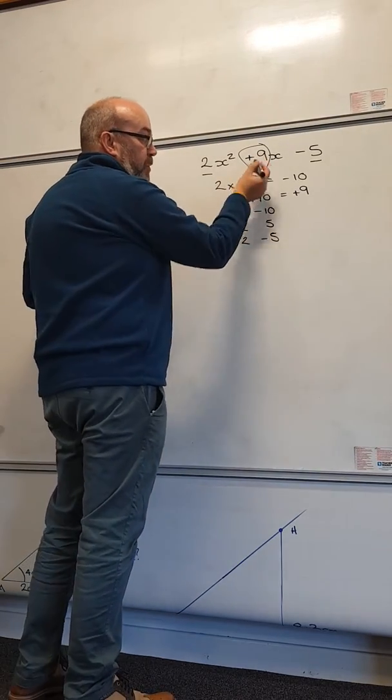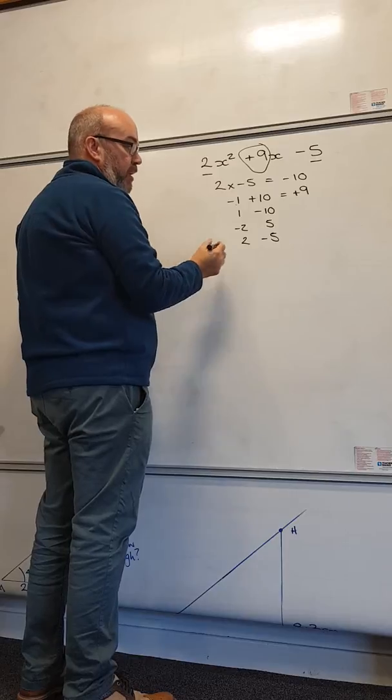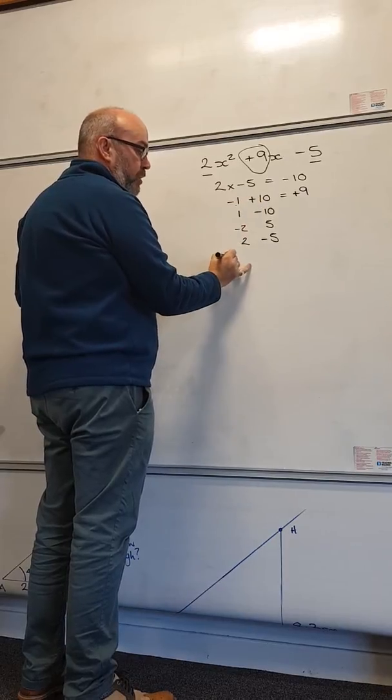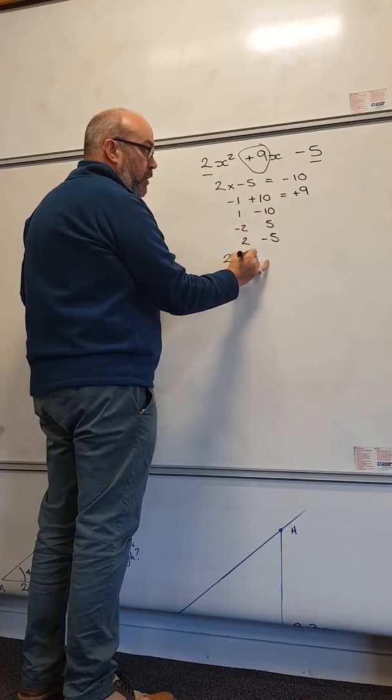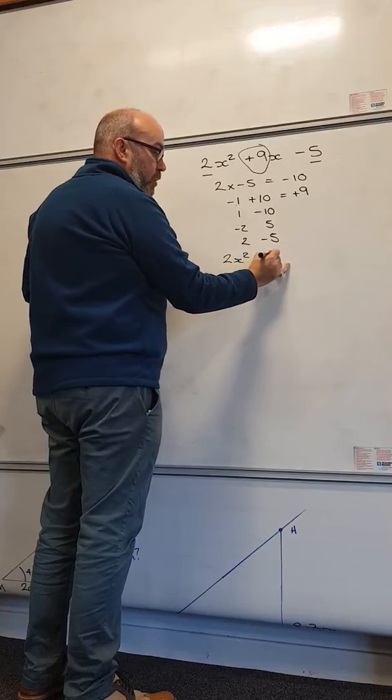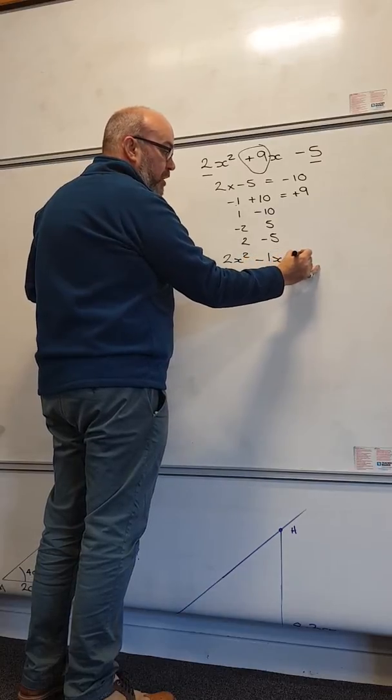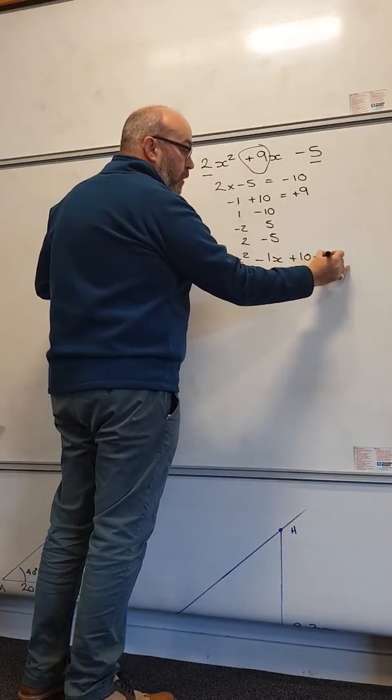What I'm going to do now is replace my 9 with the minus 1 and the 10. So that's going to give me 2x² minus 1x plus 10x minus 5.